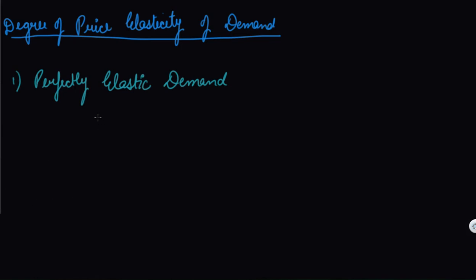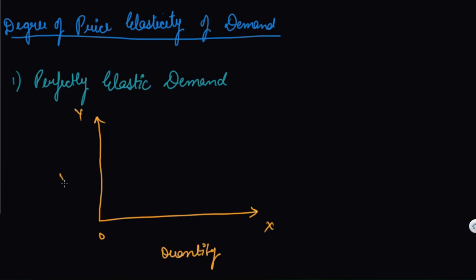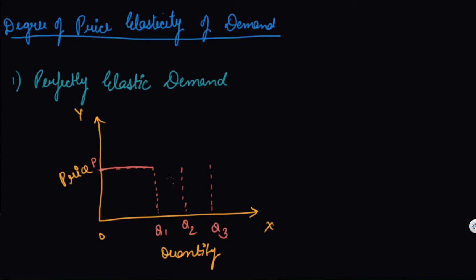Let's plot this on a graph and understand how it works. We take the initial price at P and quantity at Q1. The price of the commodity did not change, but the quantity changed — maybe due to income, or due to taste and preferences, or due to the price of related goods.